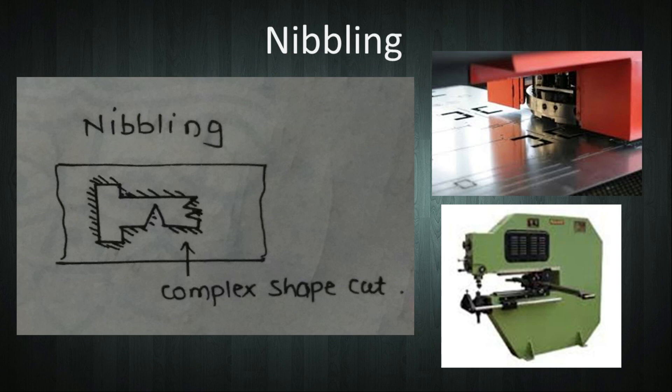Nibbling is cutting any simple to complex shape from sheet metal as shown in the figure. Here, a variety of shapes can be cut as per requirement. A nibbling machine is shown in the figure.